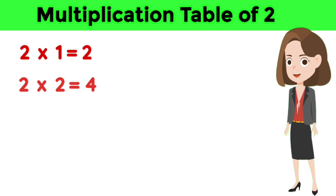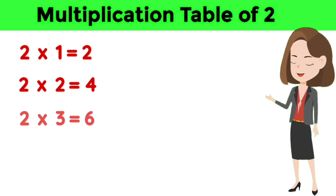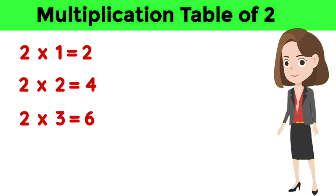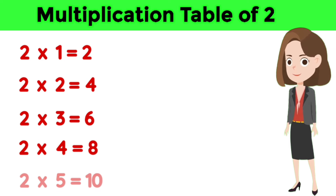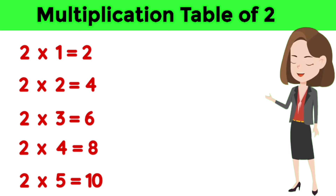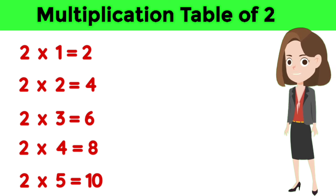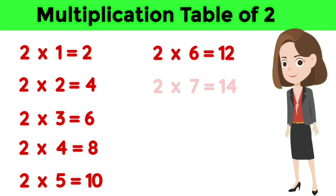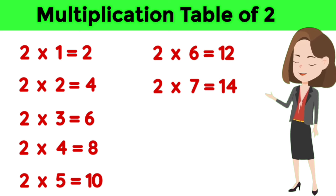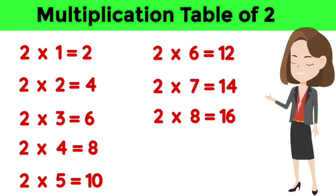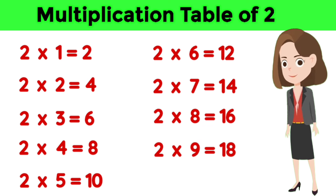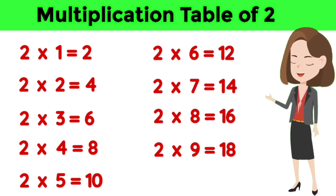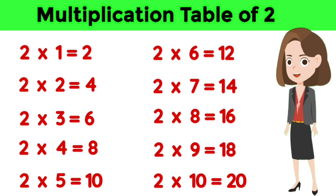Two ones are two. Two twos are four. Two threes are six. Two fours are eight. Two fives are ten. Two sixes are twelve. Two sevens are fourteen. Two eights are sixteen. Two nines are eighteen. And two tens are twenty.